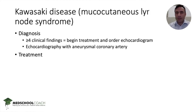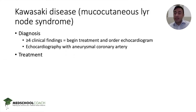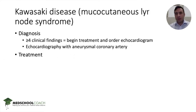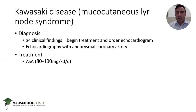The diagnosis is made with greater than or equal to four of the clinical findings. If you have that, it's enough to begin treatment and order the echocardiogram. When taking the test and looking at diseases that can kill a person quickly, you need to begin treatment before waiting on extra lab results or imaging. So if you had both options and had to select one, it would be to begin treatment first — especially if the question asks for the best initial step. Treatment is aspirin and IVIG, and dosing is not tested.